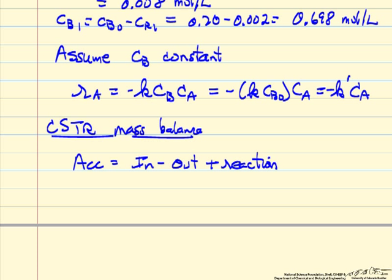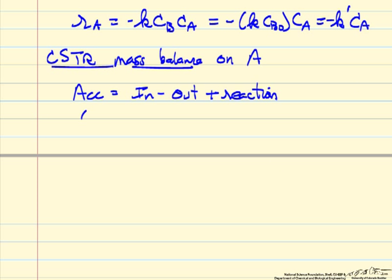So we're going to do a mass balance on component A. Steady state, so there's no accumulation. The flow in is the volumetric flow rate, Ca0 prime. Flow out is concentration in the reactor at the exit concentration. And then the reaction where A reacts is K prime, that same Ca1 times the volume of the CSTR.